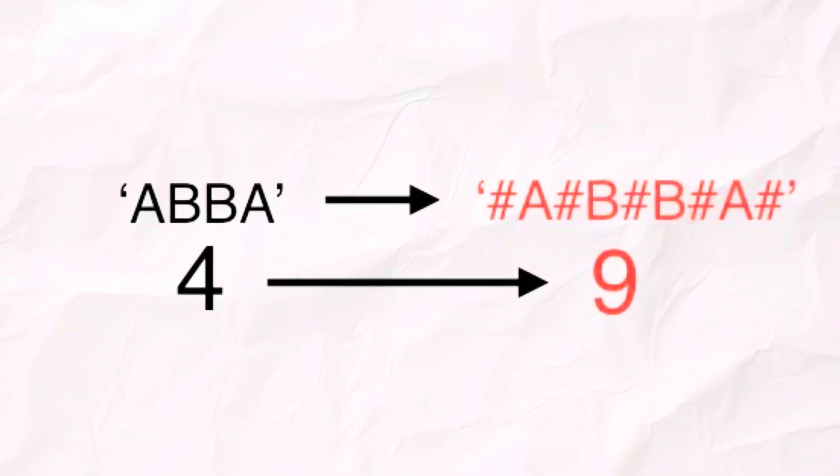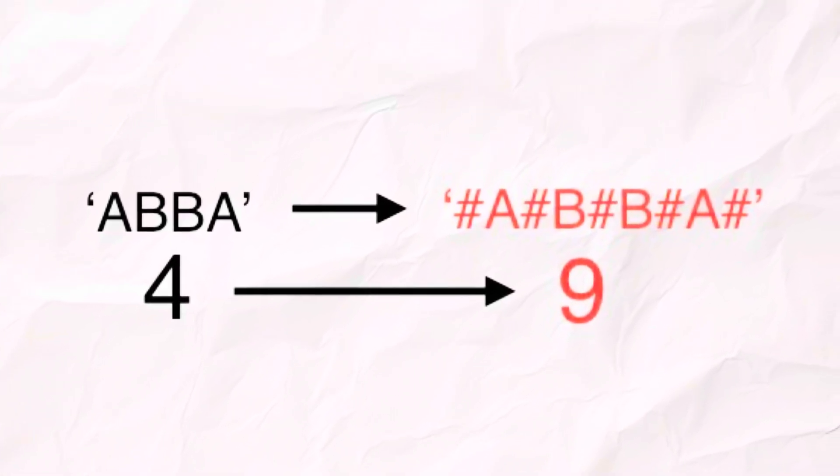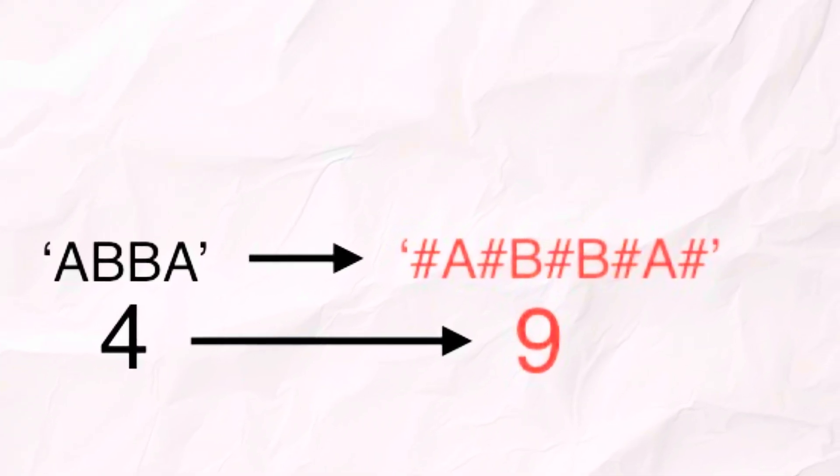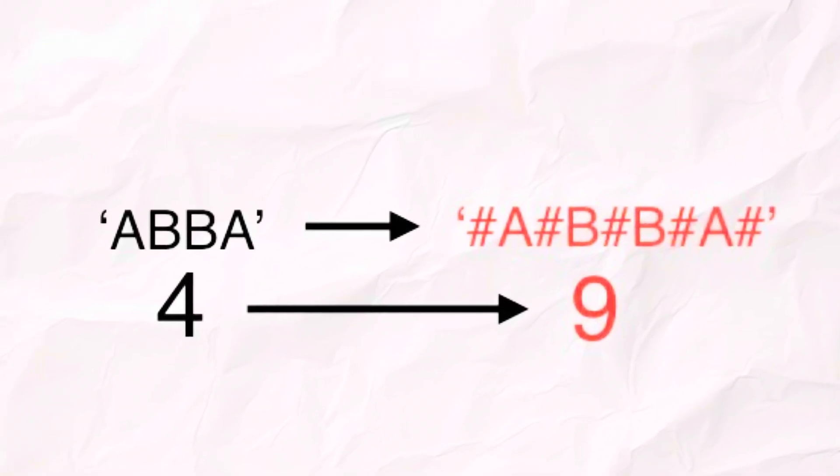So with this step, we will reach that point where every character can act as the center of a potential palindrome. No edge cases needed.